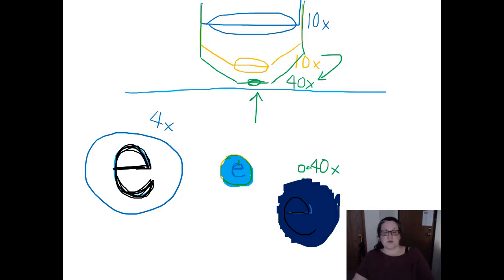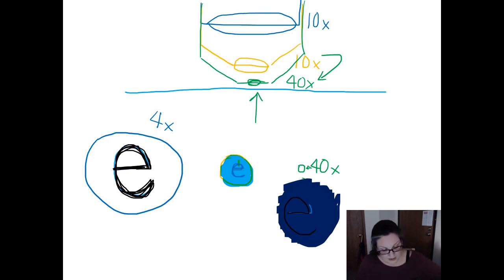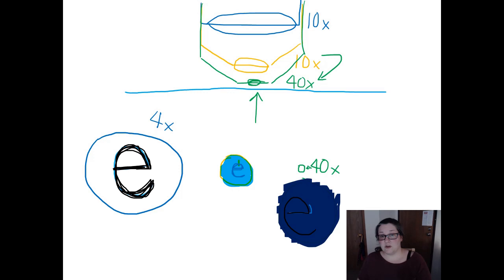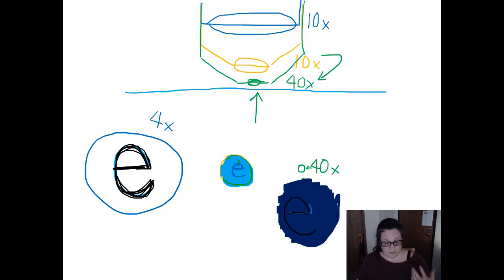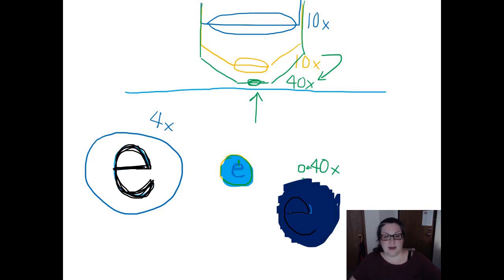Every time you change magnification, you must use the fine focus knob to focus. These microscopes are what we call par focal, which means that changing the objective does not change the focus very much — so you shouldn't have a whole lot of problems, but it still takes practice.